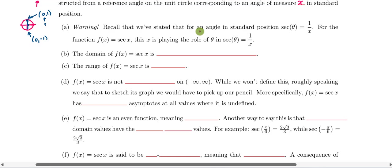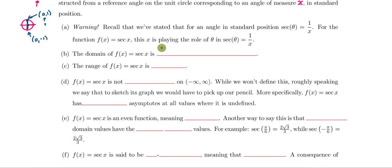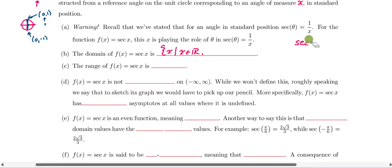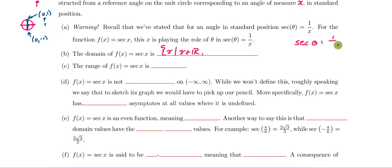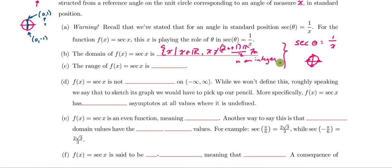Hopefully we're getting a little more comfortable with it, as this is our fourth trig graph. Stating the domain one more time: it's the set of values x such that x can be any real number except odd multiples of π/2. On the unit circle, secant is 1 over the x-coordinate, so the x-coordinate can't be zero — and that happens at the odd multiples of π/2: x ≠ (2n+1)·π/2 for n an integer.